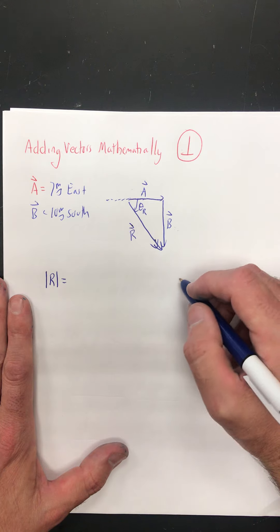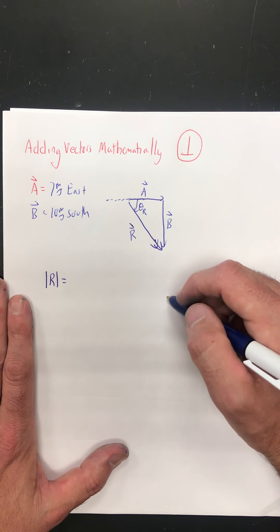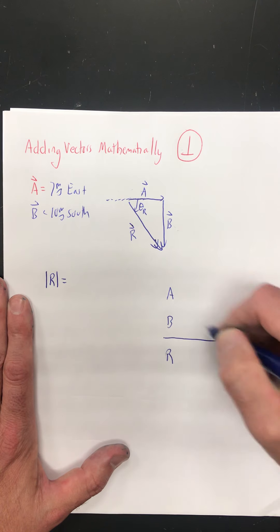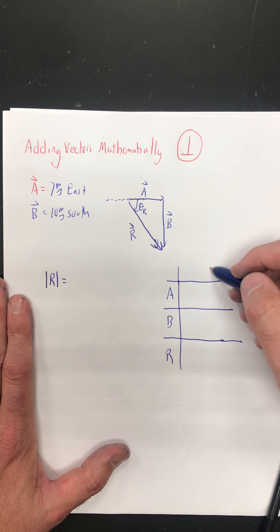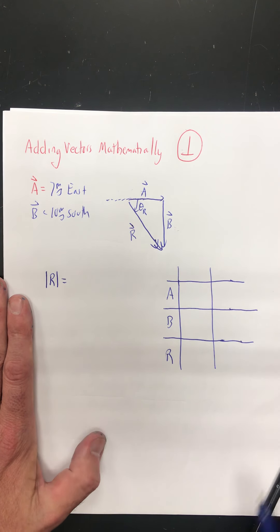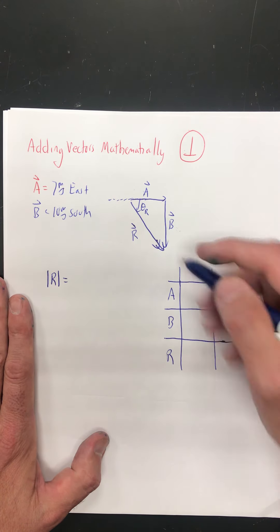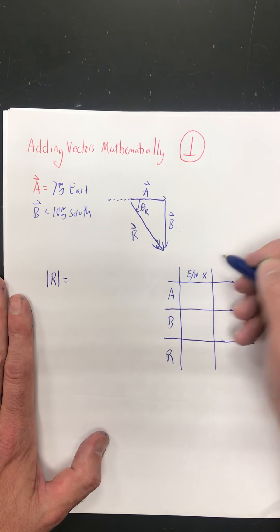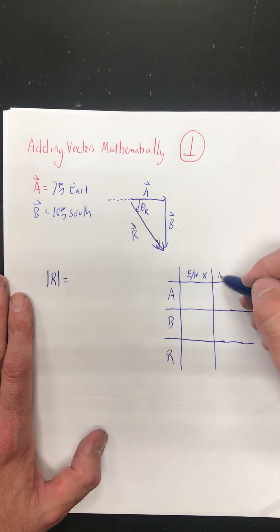The third method we talked about was the table method, so let's go back to that. We have A, B, and R. The first column is the identity of all the vectors. The second column covers everything happening horizontally along the east-west axis, or the x-axis. And separately, the third column covers everything happening along the north-south axis, or the y-axis.